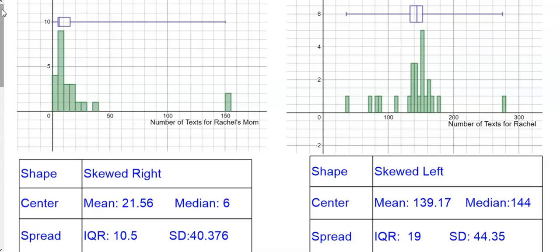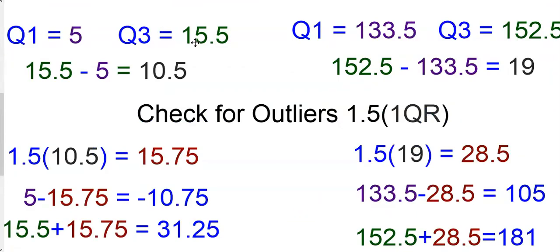So the next thing that we should do is check for outliers. We already kind of have an idea that this data value out here, the 150, is an outlier. Let's see if there are any more outliers for Rachel's mom. And let's see if Rachel has any outliers. Here I have the first quartile, third quartile listed for both data sets and the interquartile range, because we're going to need this data when we check for outliers.